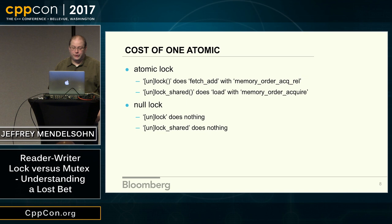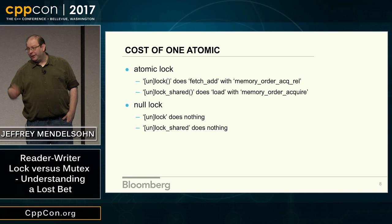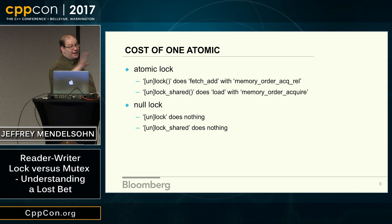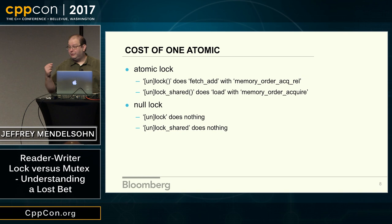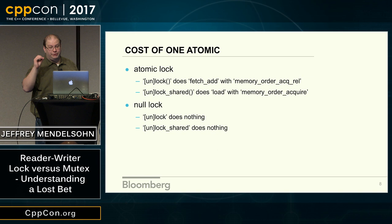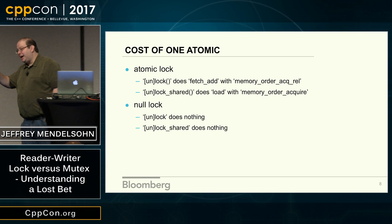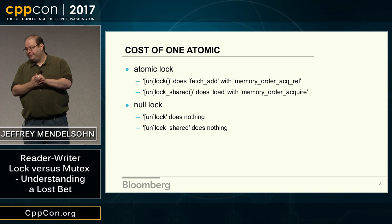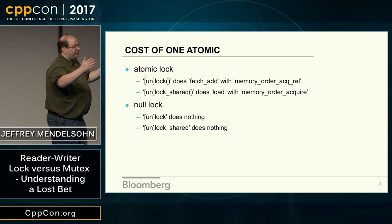I want to compare the cost of one atomic operation versus doing nothing. For this 'atomic lock,' the lock and unlock will just do a fetch-add, incrementing a value using acquire-release semantics. The lock shared and unlock shared will just load the value. This is much less than you can ever do for a real lock, but it depicts why we have such a problem comparing ourselves to a mutex. The load value determines how much work is done while holding the lock — 100 represents about the same work as the bet scenario, 10,000 is a hundred times that, and 1 is a hundredth.